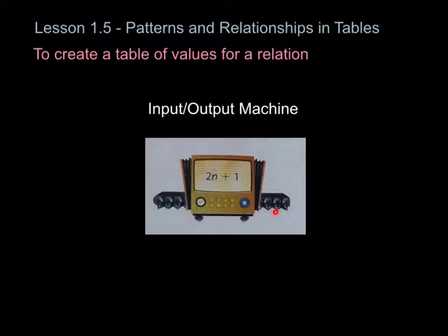So for an example, into this input-output machine, if I was to input n equals 8, I just replace my variable with 8. 2 multiplied by 8 added to 1. So 2 times 8 is 16 plus 1. That would equal 17. So my output would be 17 for that example.